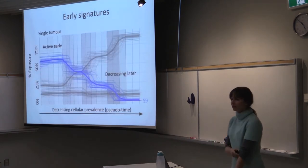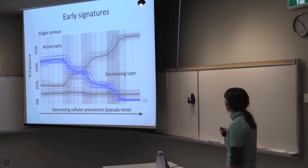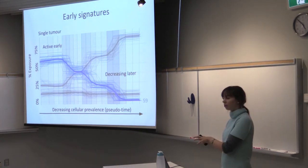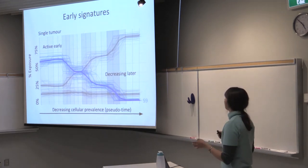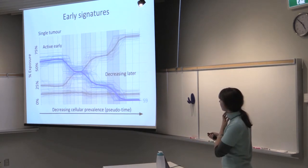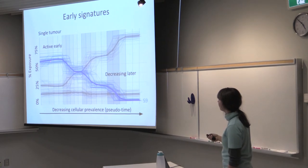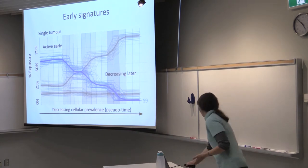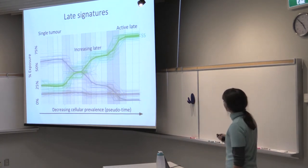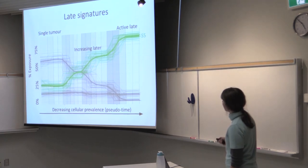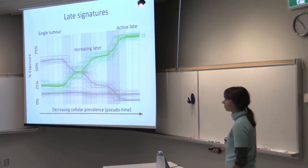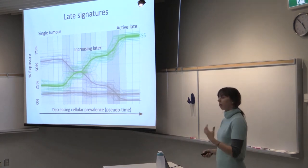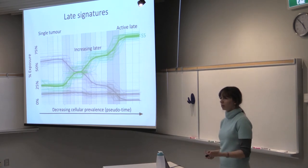So another way to look at signatures is that we can separate them into those that occur early in tumor development and those that occur late. For example, if the signature has high exposure early in the development and then decreases, we'll call it an early signature. But if it's the other way around, that it starts with small exposure and then increases over time, then we'll call it late.